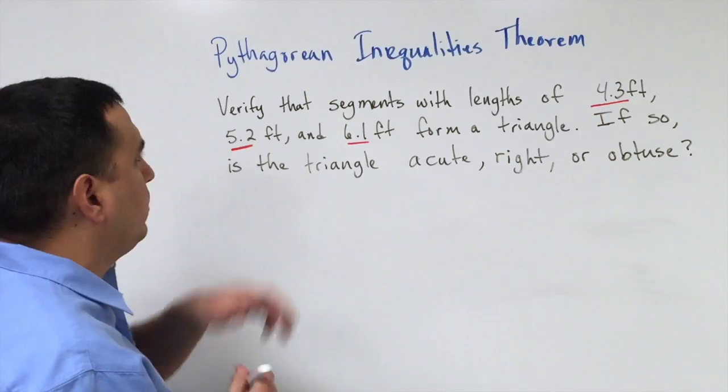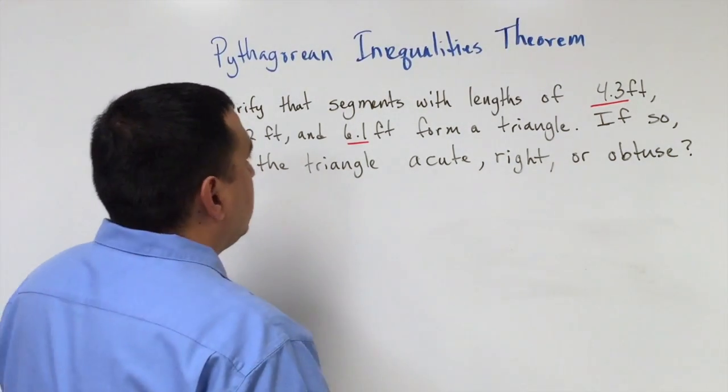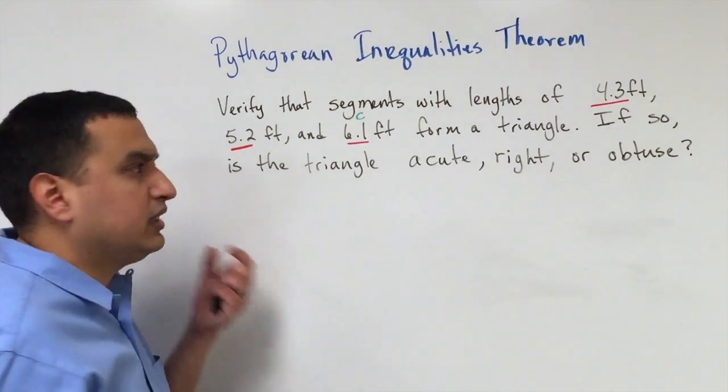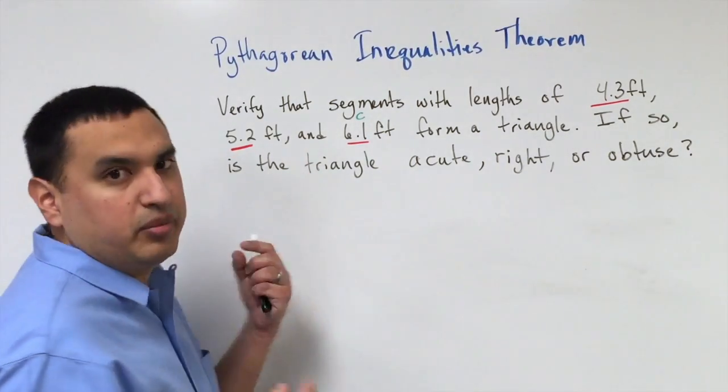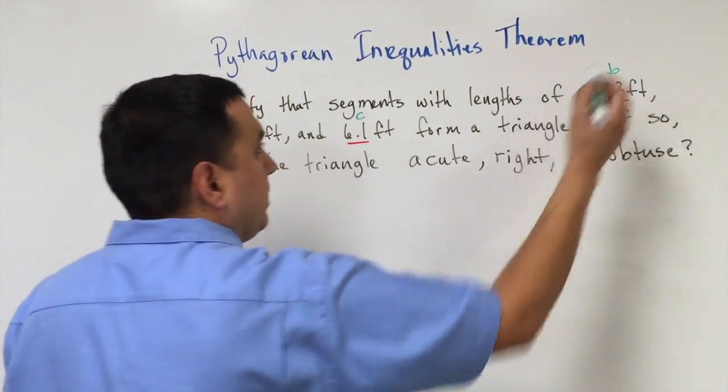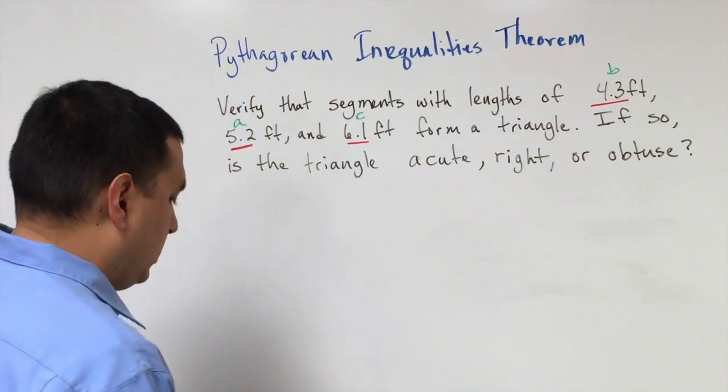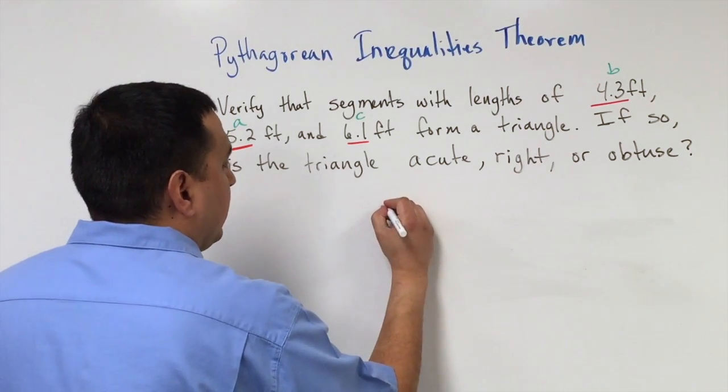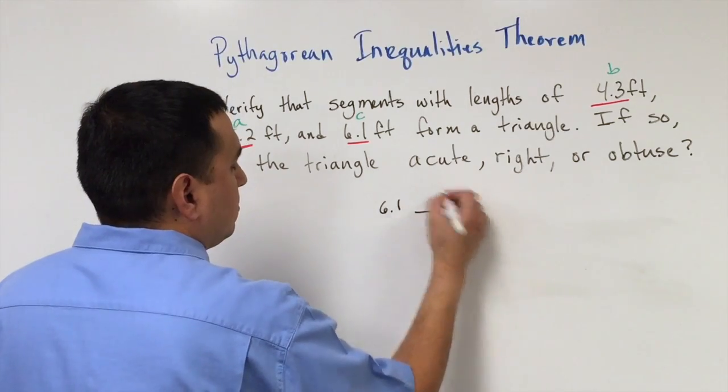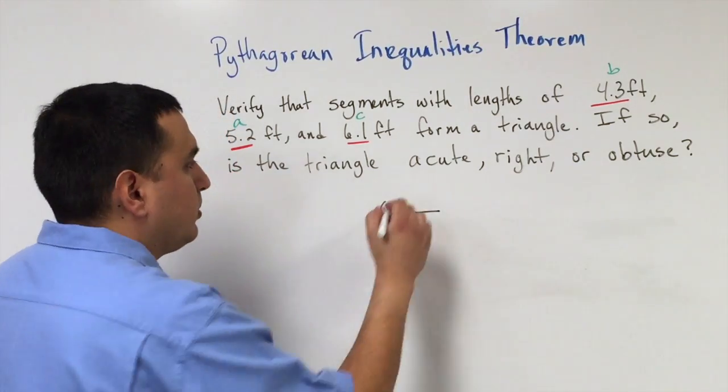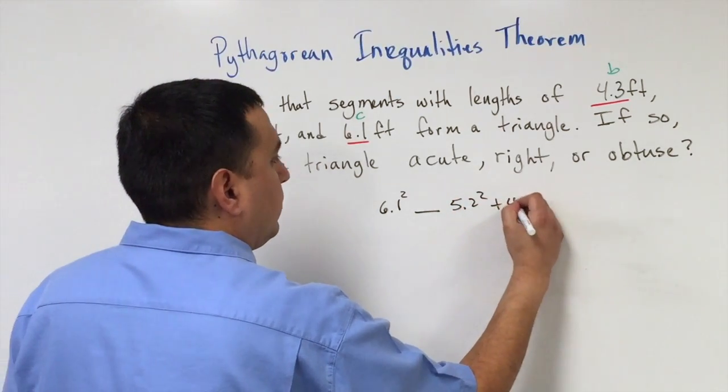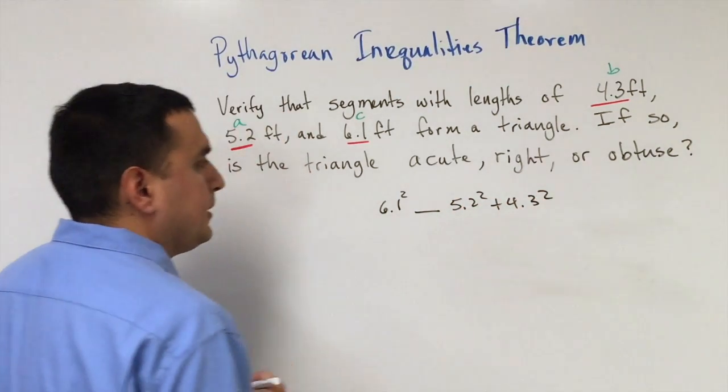What we want to do is, since 6.1 is our biggest number, that's going to be our c. Remember that it doesn't matter which one's a or b as long as it's not the biggest one. So I'm just going to let this be a and this one be b. So I'm going to compare 6.1 squared and I want to figure out what it is that's greater than, less than or equal to 5.2 squared plus 4.3 squared.